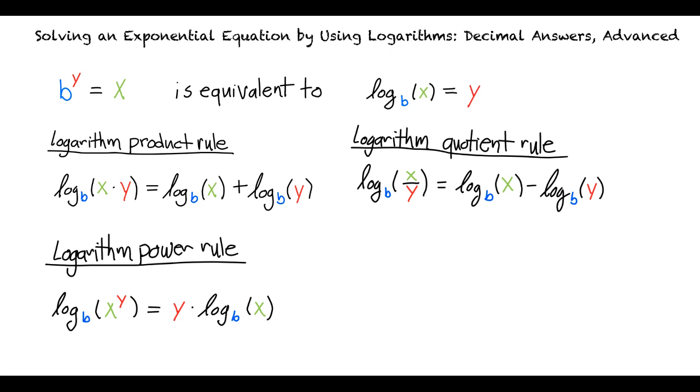The logarithm quotient rule says that the base b logarithm of x divided by y is equal to the base b logarithm of x minus the base b logarithm of y.